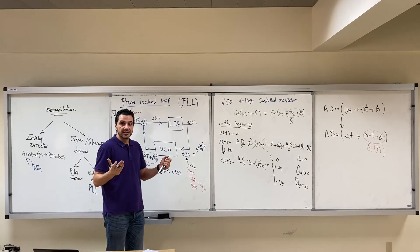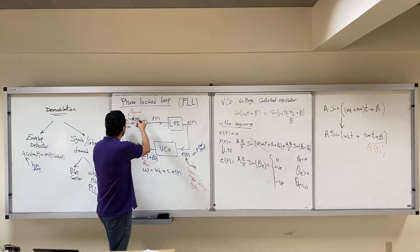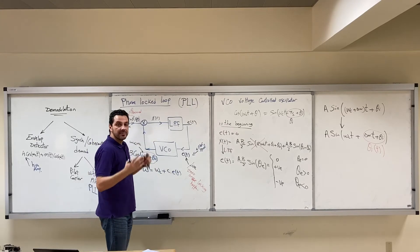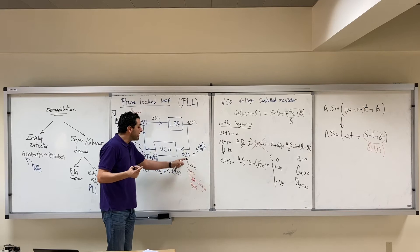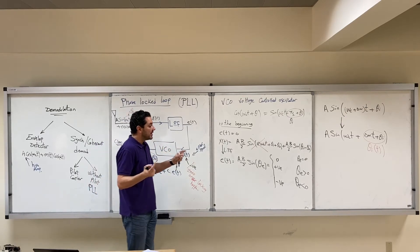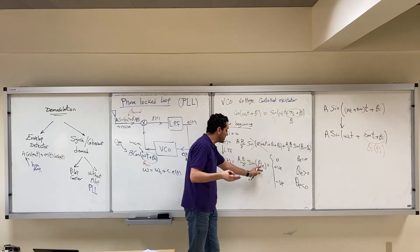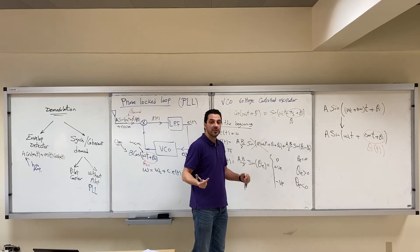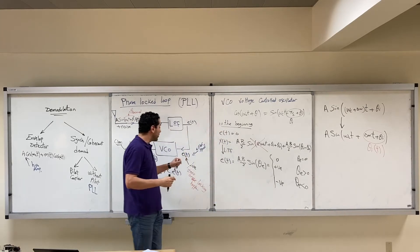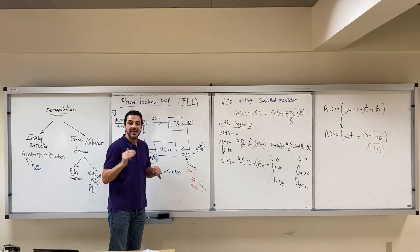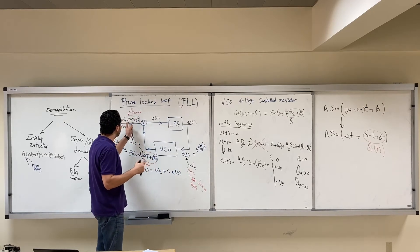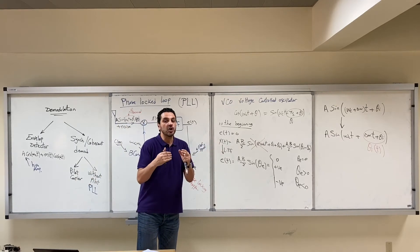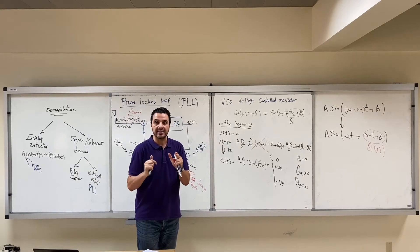The phase-locked loop has some limitations. For example, if the frequency of the incoming signal changes by a huge amount, the error signal has a limit: AB/2 · sin(theta_error). The maximum of the error signal is AB/2, and the error voltage will not be able to increase above this limit. So if the incoming frequency increases by a very large amount, the PLL might not be able to track it.